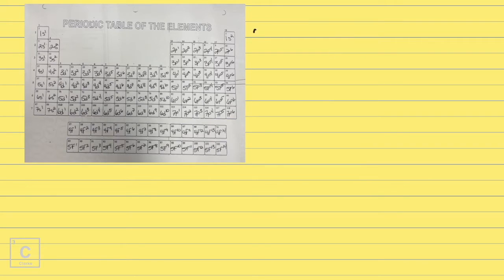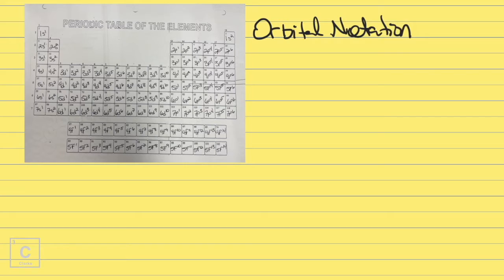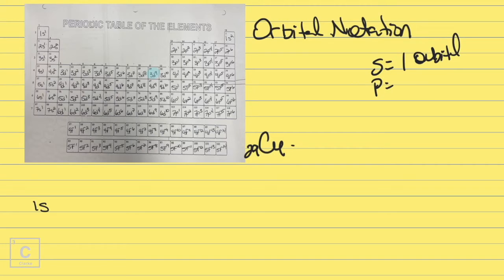Now let's do some orbital notation. With electron configuration and noble gas notation, we just looked at energy levels and sublevels — we have not looked at orbitals. Orbital notation is going to do that; we're actually going to be drawing blanks that represent orbitals. This is very similar to electron configuration — it's like expanded form. S has one orbital, p has 3 orbitals, d has 5 orbitals, f has 7 orbitals.